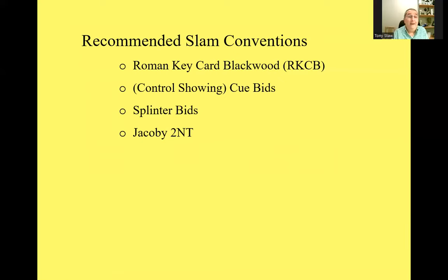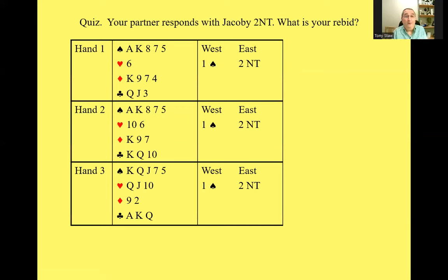Just before we end, I'm going to give a little quiz. You might want to get a pen and paper and jot down your responses. You open one spade on all of these hands, your partner rebids Two No Trump — which is Jacoby Two No Trump. Have a think about what you would bid with each of these three hands. There's going to be a poll in a moment with all three questions — think about hand one, hand two, and hand three.